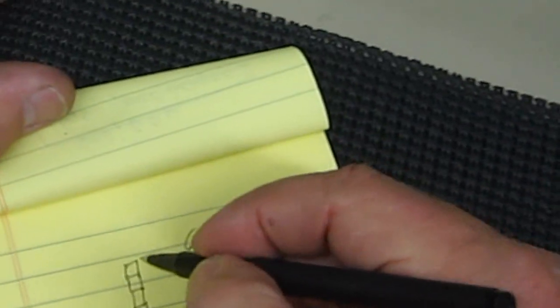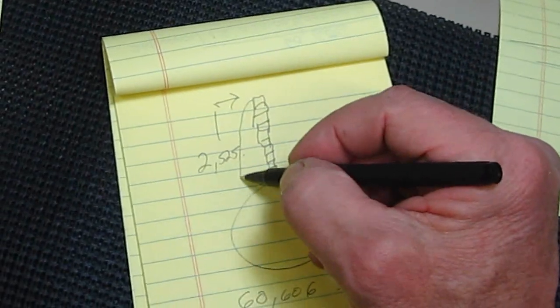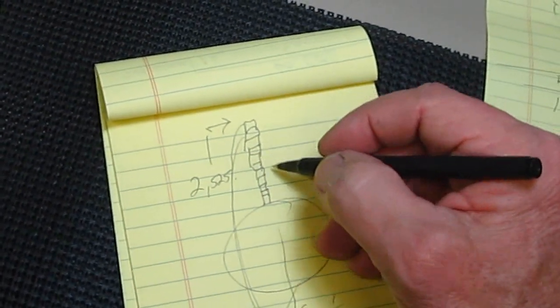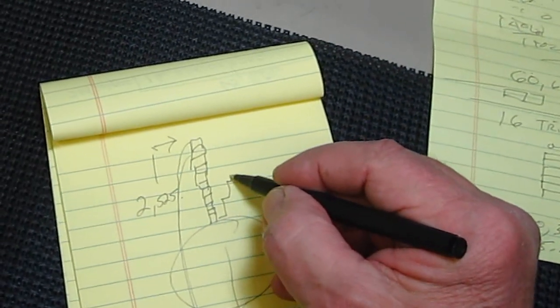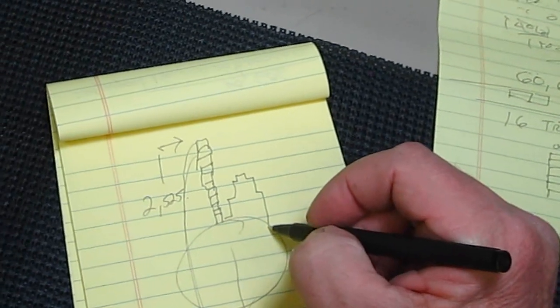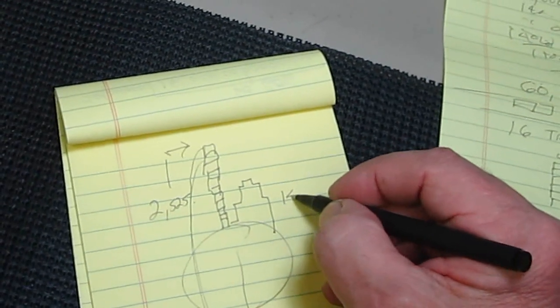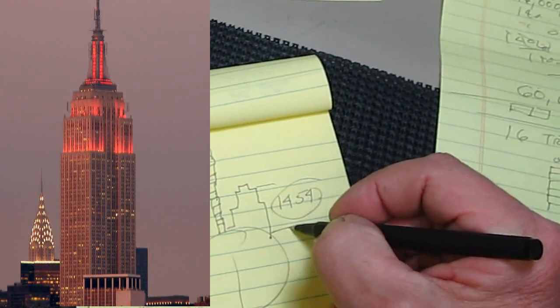Now to give you a comparison, the Empire State Building is only 1,454 feet tall, and this is 2,500, so that's like another almost 1,071 feet difference higher the cell phones would be. So isn't that kind of interesting.